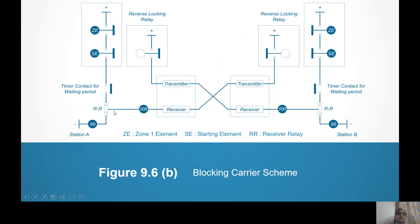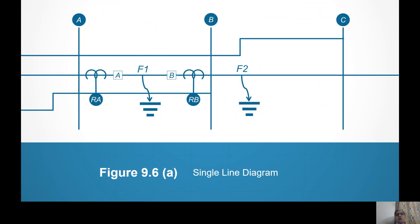So the NC contact of RR will open out before the timer contact closes. RR opens, so relay 86 cannot be energized and the circuit breaker at end A cannot trip. At end B, in any case the breaker is not opening because the fault is not within its range. This is a blocking scheme — the carrier signal is blocking the operation of relay A. Therefore this is known as the blocking carrier scheme.